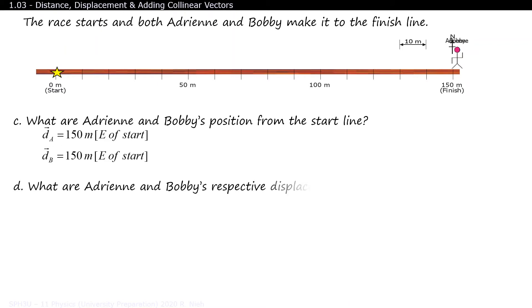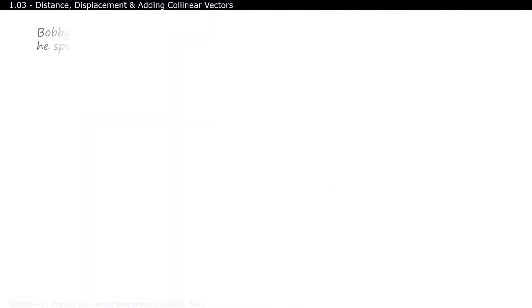But what about their respective displacements? Adrian displaced 150 meters east. Meanwhile, Bobby displaced 100 meters east. Even though they tied the race, Bobby knew that he won unfairly.